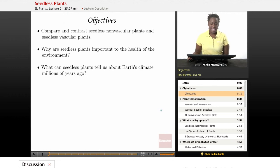The objectives for today's lesson are number one, compare and contrast seedless nonvascular plants and seedless vascular plants. Number two, why are seedless plants important to the health of the environment? And number three, what can seedless plants tell us about Earth's climate millions of years ago?